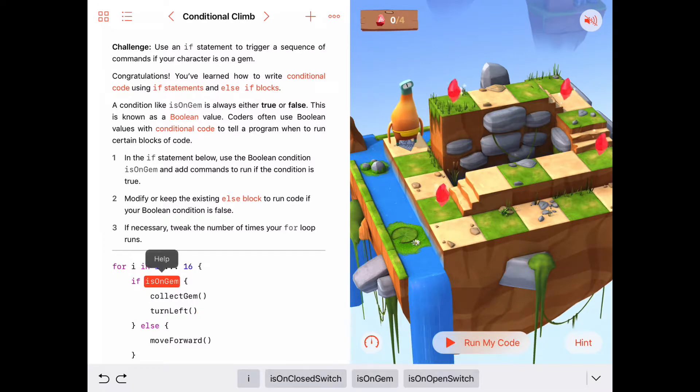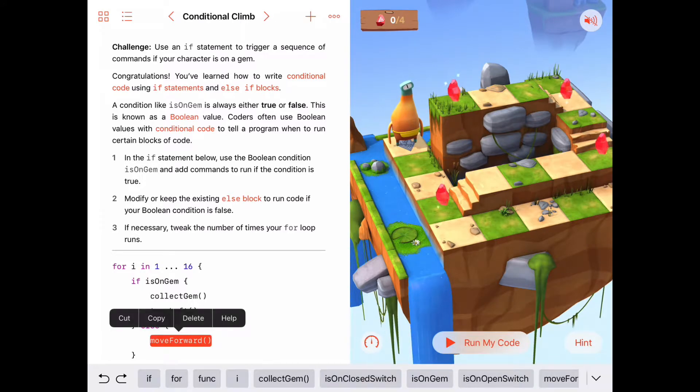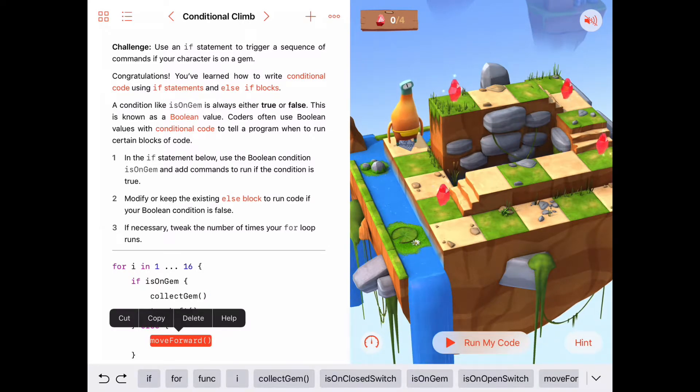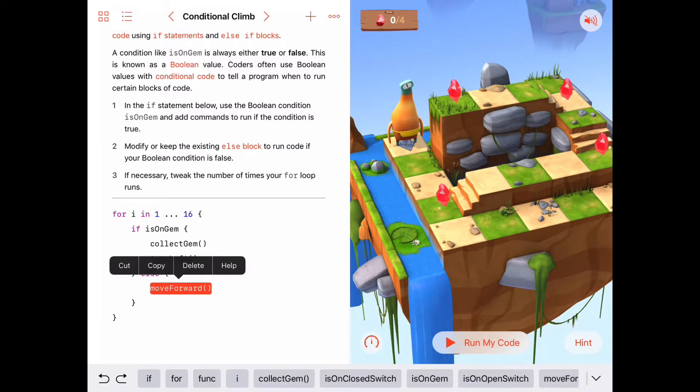Now, if is on gem is false, or if Byte's on a tile that does not contain a gem, then what we want to do is just keep moving forward. And that's most of the time in this puzzle. Most of the time you're not on a gem, and those times you just want to be moving forward. But on those rare times when you are on a gem, we want to grab the gem and then turn to the left so that we're ready the next time to keep moving forward.